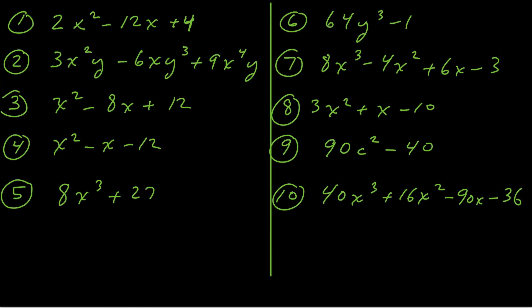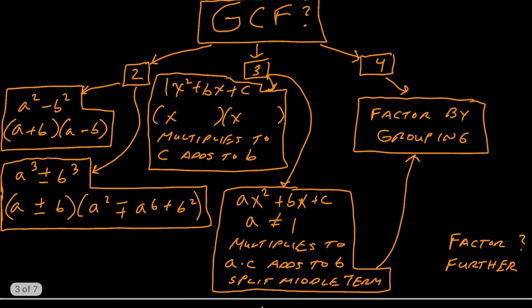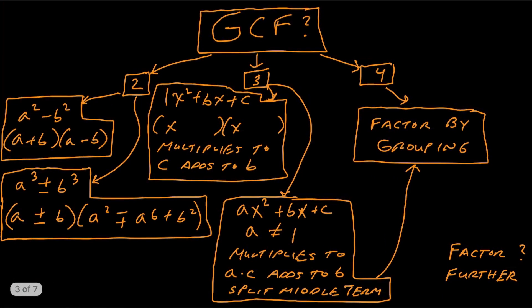The next thing we want to take a look at is this chart right here. This basically gives us a decision tree or hierarchy of what we want to do first, second, third when we're factoring. At the very top of the chart, we have GCF — the greatest common factor. You always want to look for that greatest common factor first.